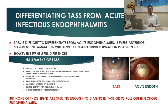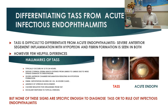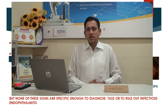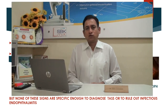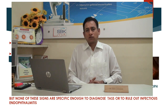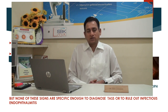However, there are certain clinical features which can definitely differentiate TASS from infectious endophthalmitis. These are called the hallmarks of TASS: onset is within 12 to 24 hours, limbus-to-limbus corneal edema, vitreous is relatively clear, and there is a dramatic response to steroid. But none of the signs are specific enough alone to diagnose TASS or exclude infectious endophthalmitis.